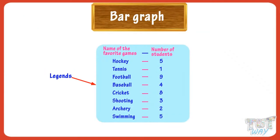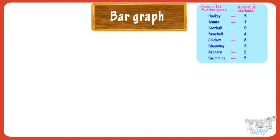We are given data from a class of students. The favorite game of each student was asked and noted down. 5 students like hockey the most, 1 student's favorite game is tennis, and 9 students' favorite game is football, and so on. Now let's see how it can be represented in the form of a bar graph.